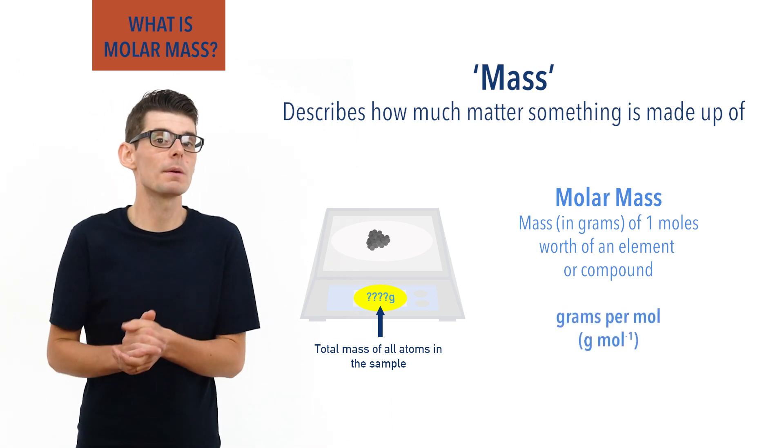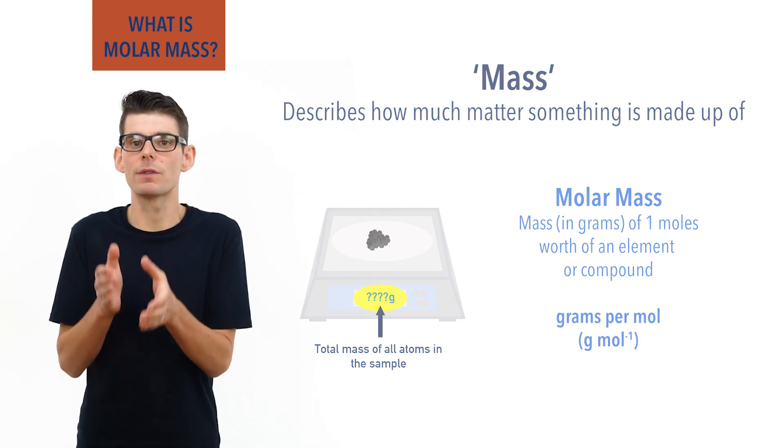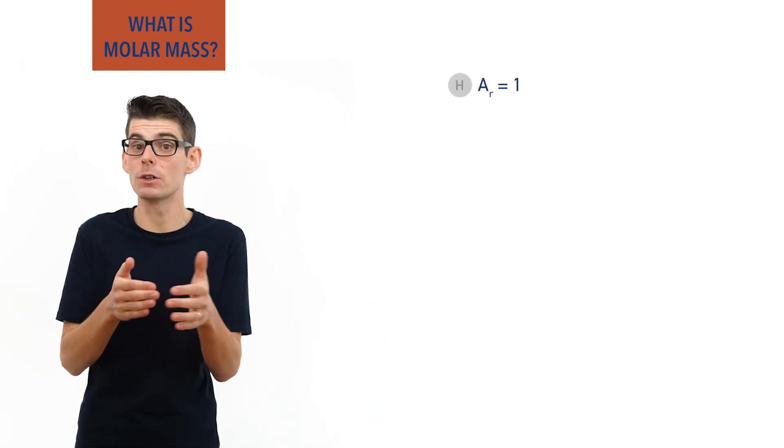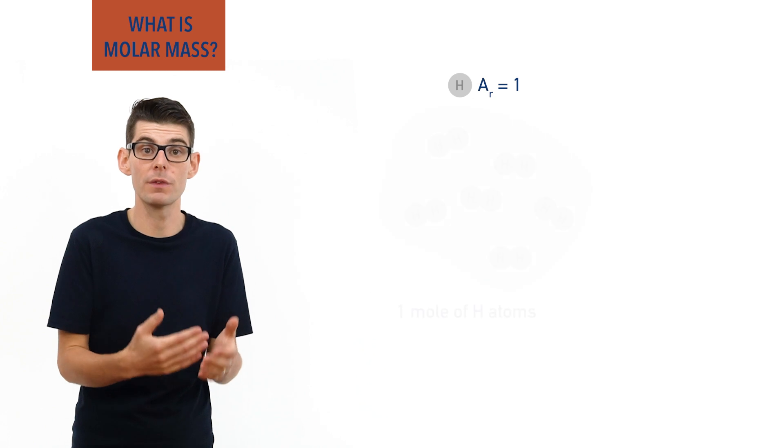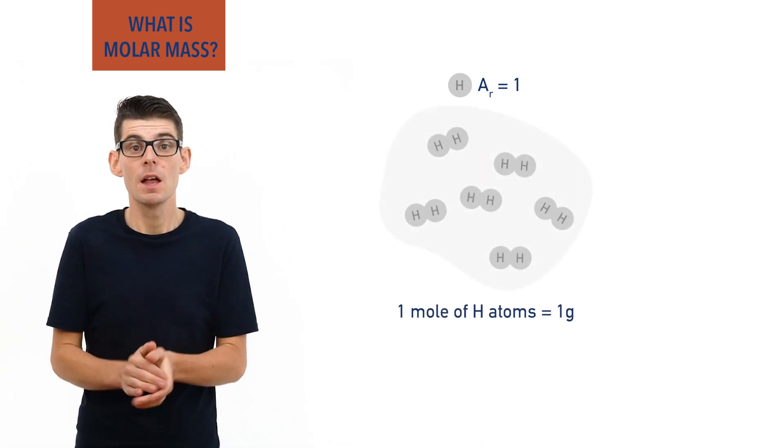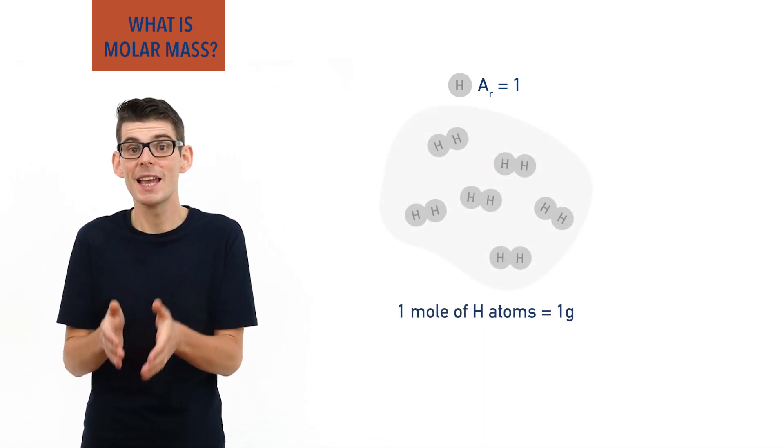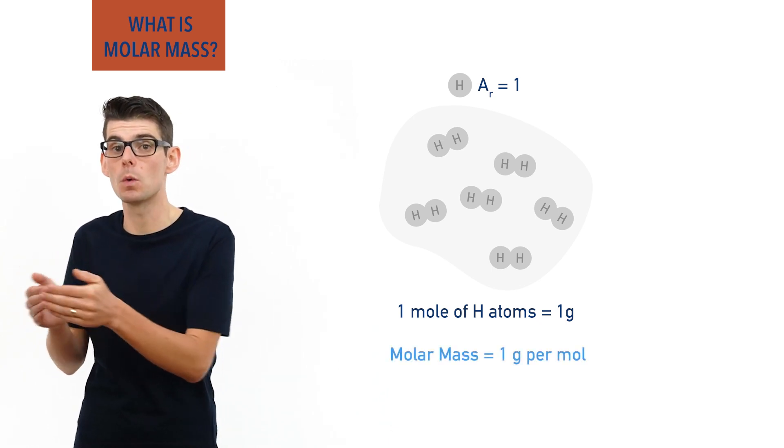For example, the relative atomic mass of hydrogen equals one, and this means the mass in grams of one mole's worth of hydrogen atoms is one gram. The molar mass of hydrogen then is one gram per mole.